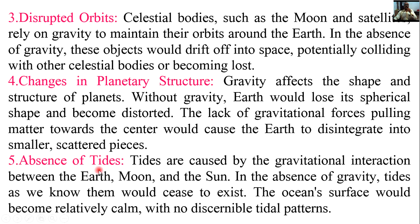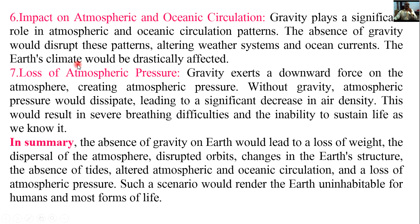Number five: absence of tides. Tides are caused by the gravitational interaction between the Earth, moon, and sun. In the absence of gravity, tides as we know them would cease to exist. Number six: impact on atmospheric and ocean circulation. Gravity plays a significant role in atmospheric and oceanic circulation patterns. The absence of gravity would disrupt these patterns, altering weather systems and ocean currents.